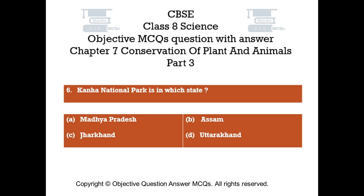Question number 6. Kanha National Park is in which state? Option A - Madhya Pradesh. Option B - Assam. Option C - Jharkhand. Option D - Uttarakhand.